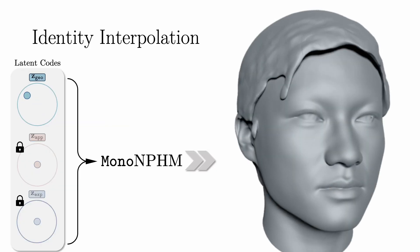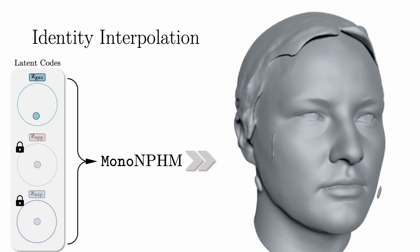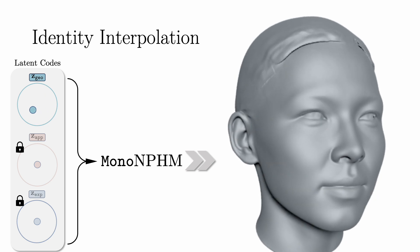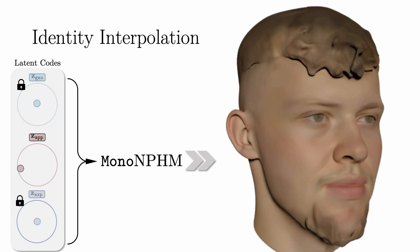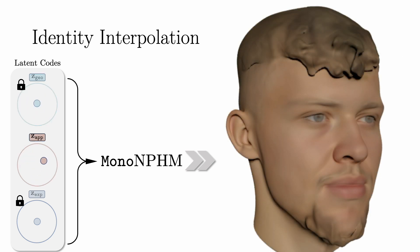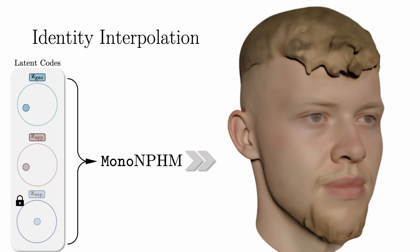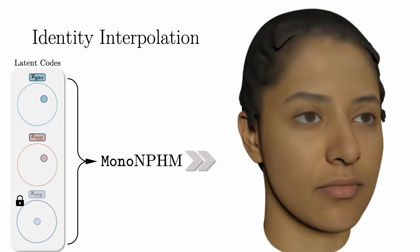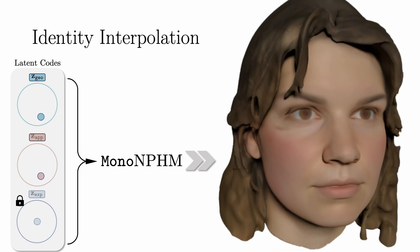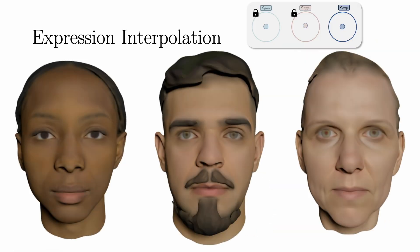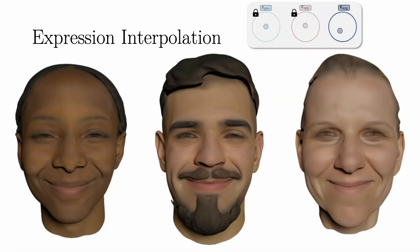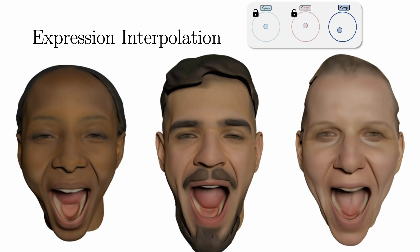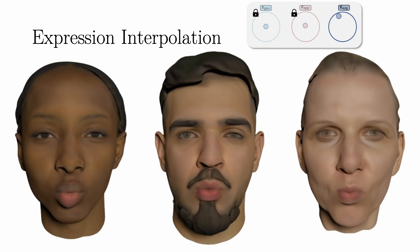Next, we show interpolations in the learned latent geometry representation. When interpolating the appearance, the color output faithfully adopts to the current geometry. Here, we show joint interpolation of geometry and appearance codes. Interpolating between expression codes results in plausible face movement.